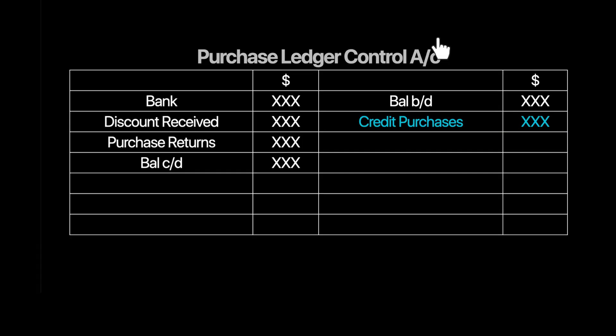The purchase ledger control account records your trade payables, which are a liability. Liabilities increase from the credit side and decrease from the debit side. Opening trade payables go on the credit side, and closing trade payables also appear there. The missing figure is credit purchases. Payments to trade payables decrease your liability and go on the debit side, along with discount received and purchase returns.